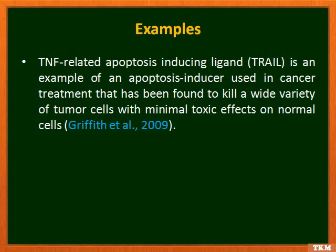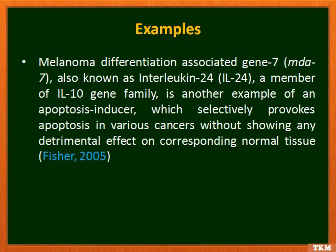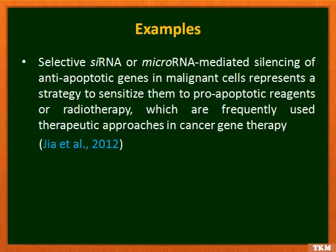TNF-related apoptosis-inducing ligand (TRAIL) is an example of an apoptosis inducer used in cancer treatment that has been found to kill a wide variety of tumor cells with minimal toxic effects on normal cells. Melanoma differentiation-associated gene 7 (MDA-7), also known as interleukin-24, a member of the IL-10 gene family, is another example of an apoptosis inducer which selectively provokes apoptosis in various cancers without detrimental effects on normal tissue. Gene silencing of anti-apoptotic genes also represents a strategy to sensitize malignant cells to pro-apoptotic reactions or radiotherapy.